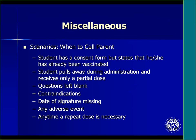When should a parent be called? If the student has a consent form but states that he or she has already been vaccinated, contact the parent to confirm. If the student pulls away during administration and receives only a partial dose, contact the parent to ask if they would like you to attempt vaccination again — if you are unable to contact the parent, do not revaccinate. If questions are left blank on the consent form, you may attempt to call the parent; however, if the clinic is very busy, the clinic manager does not need to call, but the student should not be vaccinated. If the student has contraindications, you may contact the parent to explain, but again if the clinic is busy, the manager does not need to call — the student should not be vaccinated. The parent should be contacted for any adverse event and any time a repeat dose is necessary.